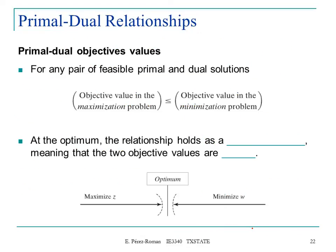The primal-dual objective values: for any pair of feasible primal and dual solutions, the objective value in the maximization problem is less than or equal to the objective value in the minimization problem. It is always true. At the optimum, the relationship holds as a strict equation, meaning that the two objective functions are equal.